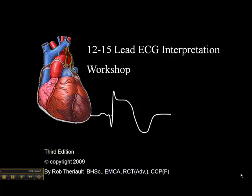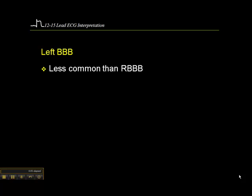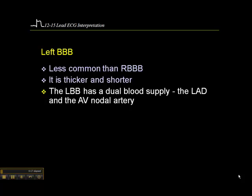On page 33 is a description of left bundle branch block. Left bundle branch block is less common than right bundle branch block. The left bundle is thicker and shorter — longer and thinner versus thicker and shorter — and the left bundle branch has a dual blood supply: the LAD and the AV nodal artery.